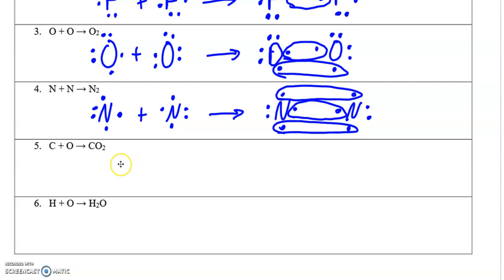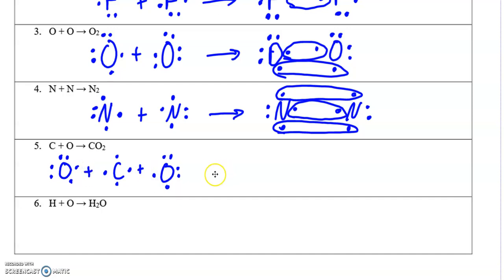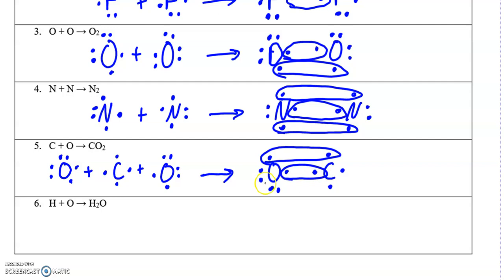Let's do carbon dioxide. Carbon has four valence electrons. Each oxygen has six. The carbon can form four bonds with its four valence electrons. Each oxygen can only form two bonds. Let's check this out — that gives oxygen an octet counting one through eight. Carbon doesn't have an octet yet, though — only counting one through six.